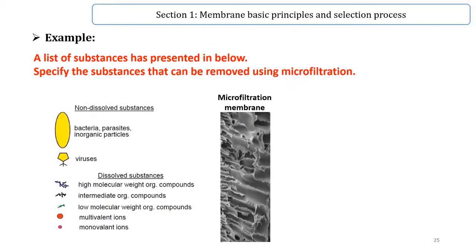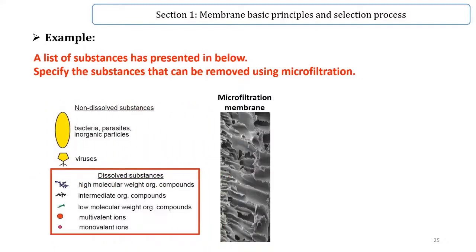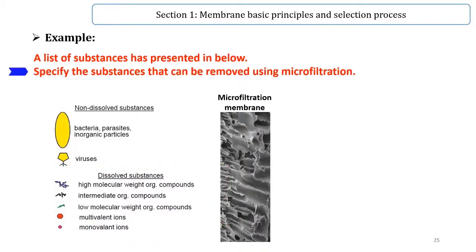For a better understanding of microfiltration in the removal of substances, an example is presented. A list of substances includes non-dissolved substances such as bacteria, parasites, inorganic particles, and viruses, and dissolved substances such as high and low molecular weight organic compounds, intermediate organic compounds, multivalent ions, and monovalent ions. The task is to specify which substances can be removed using microfiltration.